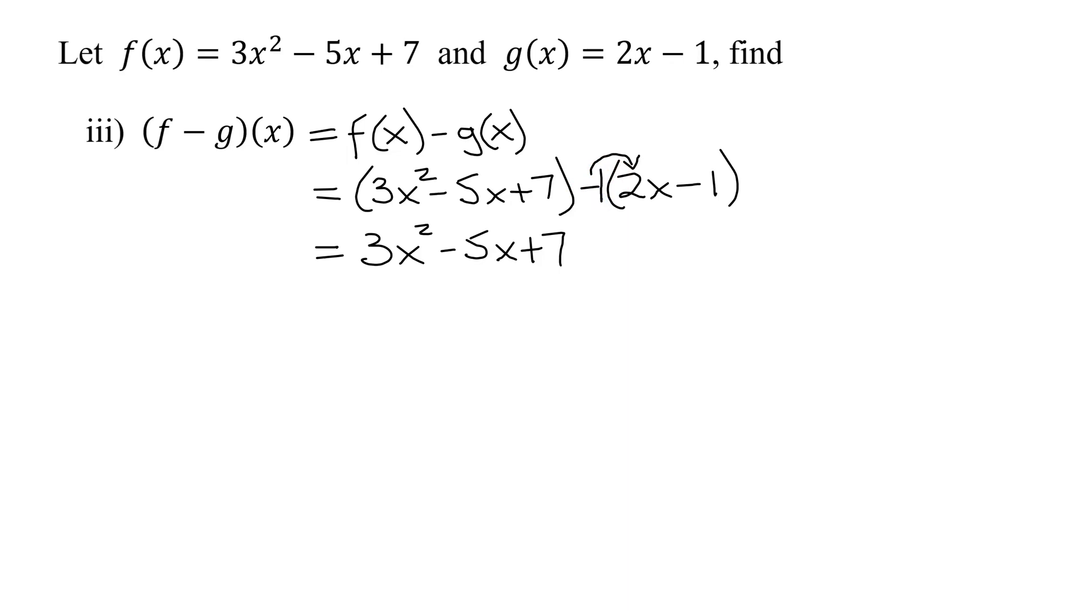So now what I'm going to do is distribute this negative into the parentheses. And remember, that negative is really a -1. So I have -1 × 2x is -2x. And then -1 × -1 is +1. Double check, when you distribute a negative through a parentheses, you change all the signs in the following parentheses. So positive 2x became -2x and -1 became +1. So last thing, look for like terms. Is there a like term that goes with 3x²? No, there's no other x² term. Now I have a -5x - 2x. Those are like terms. -5 added to a -2 is -7x. And lastly, I have my constants of 7 + 1. 7 + 1 is 8. So I have +8. So the definition of my difference function, (f - g)(x), equals 3x² - 7x + 8.